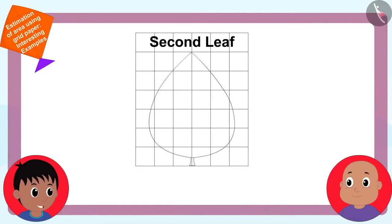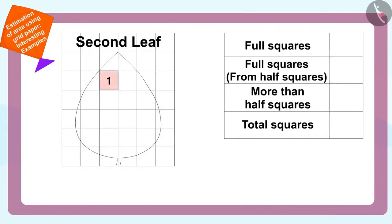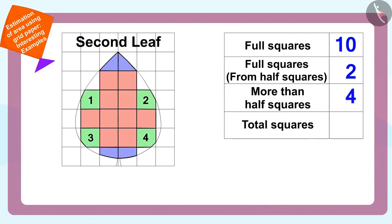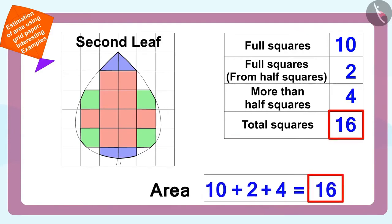Can you now use this process to find how many squares are in the area of the second leaf? The area of the second leaf has ten full squares, four half squares (equal to two full squares), and four more than half squares. There are some less than half squares which are not counted. In this way, there are ten plus two plus four, or sixteen squares in the enclosed area of the second leaf.